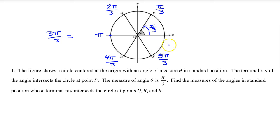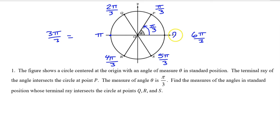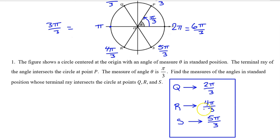And then if we complete the circle, we are all the way around to 6pi over 3, which reduces to 2pi. So these are the answers to number 1.